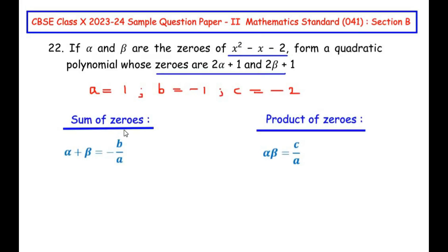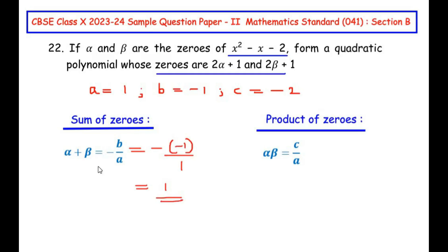The sum of zeros is given by the formula alpha plus beta equals minus b over a, and the product of zeros alpha times beta equals c over a. Substituting: minus b over a gives us negative of negative 1 over 1, which is positive 1. So alpha plus beta equals 1. For the product, c over a gives us negative 2 over 1, which is negative 2. So alpha times beta equals negative 2.